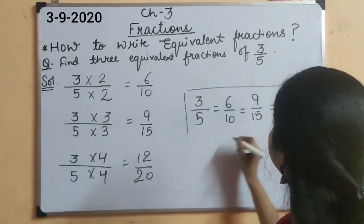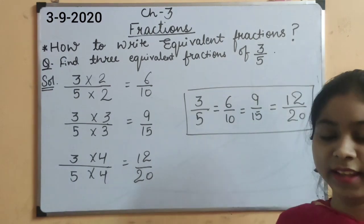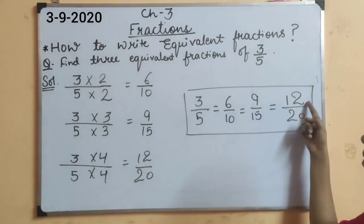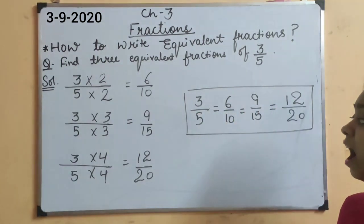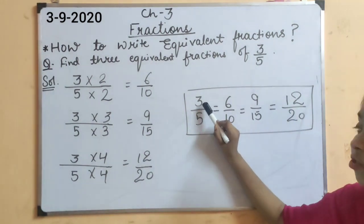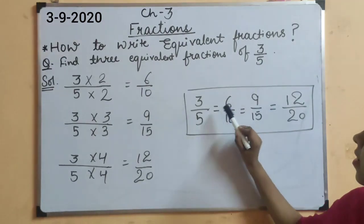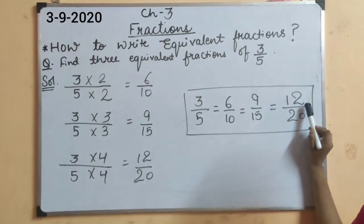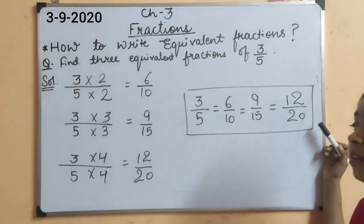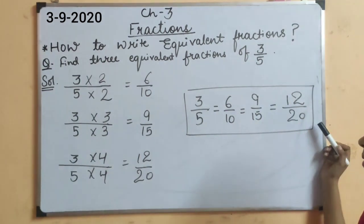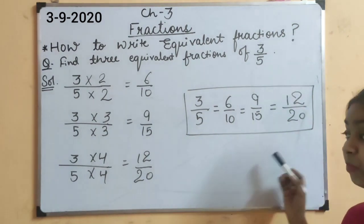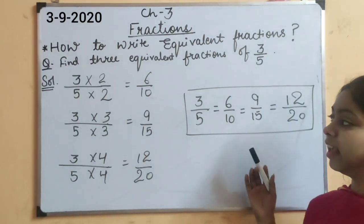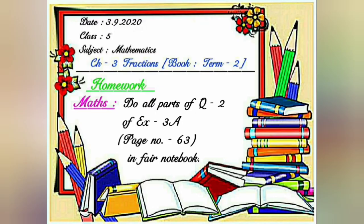Now, you can observe here one most important thing that in the above means in the numerator, the table of 3 is there and in the denominator table of 5 is there. Like 3, it's only 1. 3 1's are 3, then 3 multiplied with 2, 6. 3 3's are 9, 3 4's are 12. It's only we have multiplied it through our whole numbers. 5 1's are 5, 5 2's are 10, 5 3's are 15, 5 4's are 20. So, this is the way how we can write our equivalent fractions.